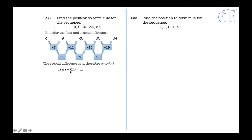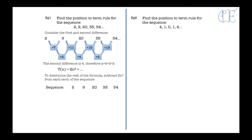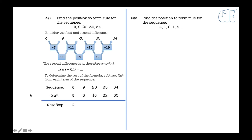To determine the rest of the formula, subtract 2n squared from each term of the sequence. The first term is 2: 1 squared times 2 is 2. The second term is 9: 2 squared times 2 is 8. Continuing this all the way along and subtracting, we end up with the new sequence 0, 1, 2, 3, 4. The position-to-term rule for this new sequence is n minus 1.